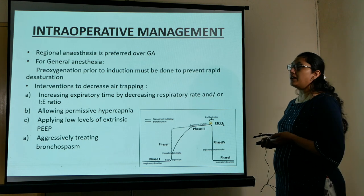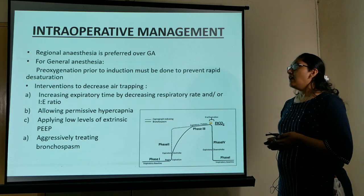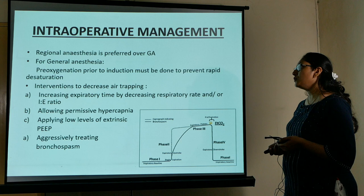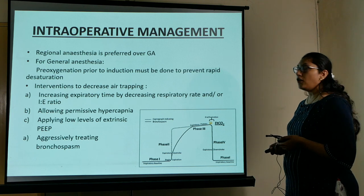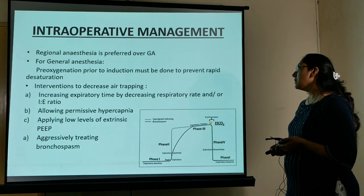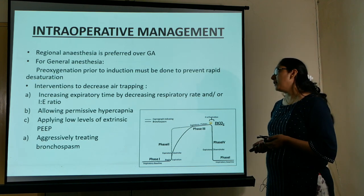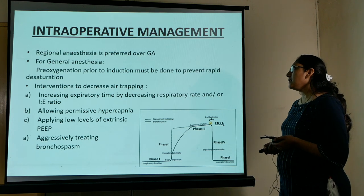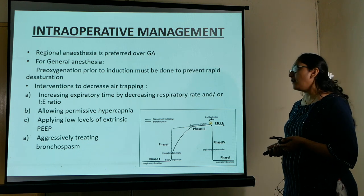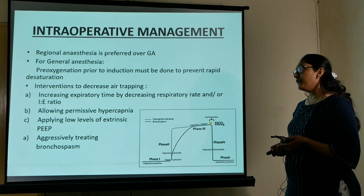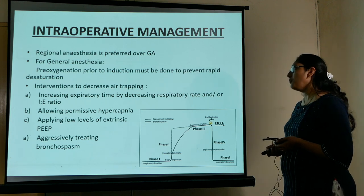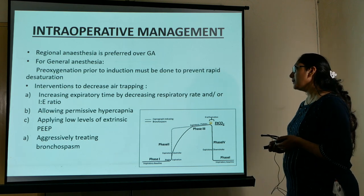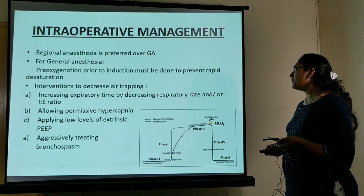For intraoperative management, we prefer regional anesthesia as much as possible. If general anesthesia is required, pre-oxygenation is very important, and we must take measures to decrease air trapping by increasing expiratory time and increasing the I:E ratio. We must allow permissive hypercapnia, as these patients have higher baseline CO2 levels. Applying low levels of extrinsic PEEP to match auto-PEEP, and aggressively treating any bronchospasm, are also essential.